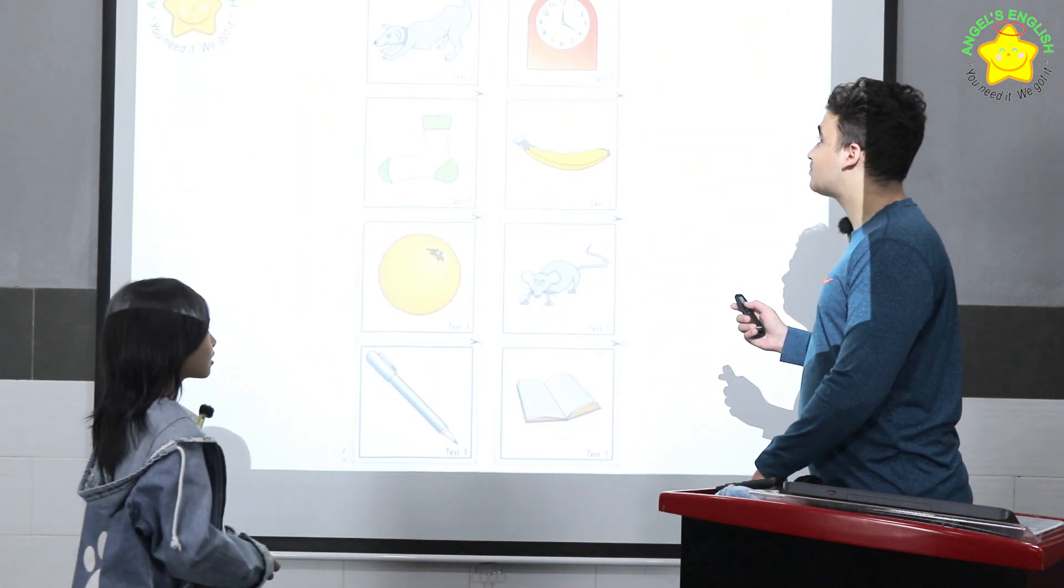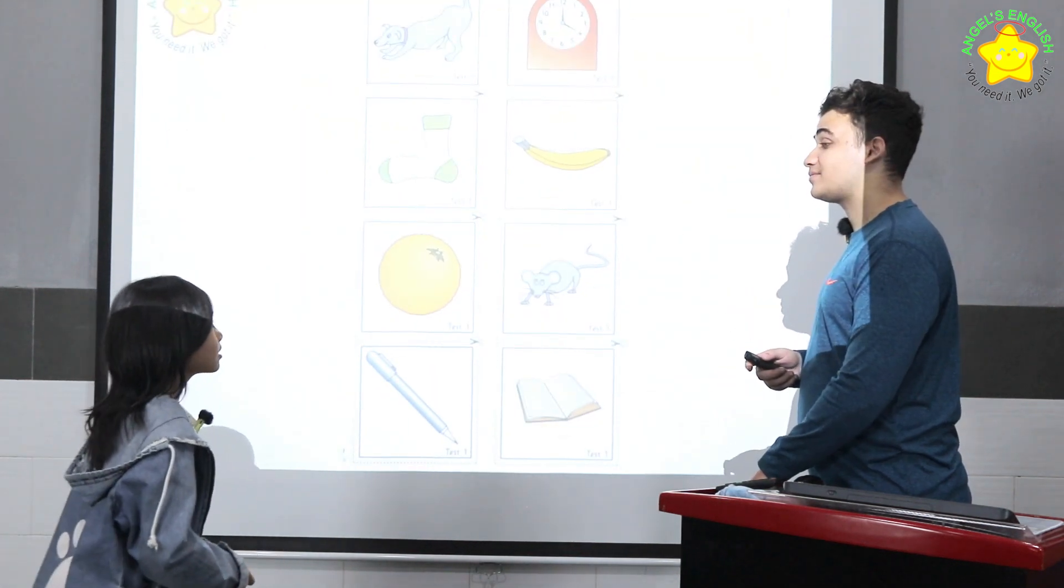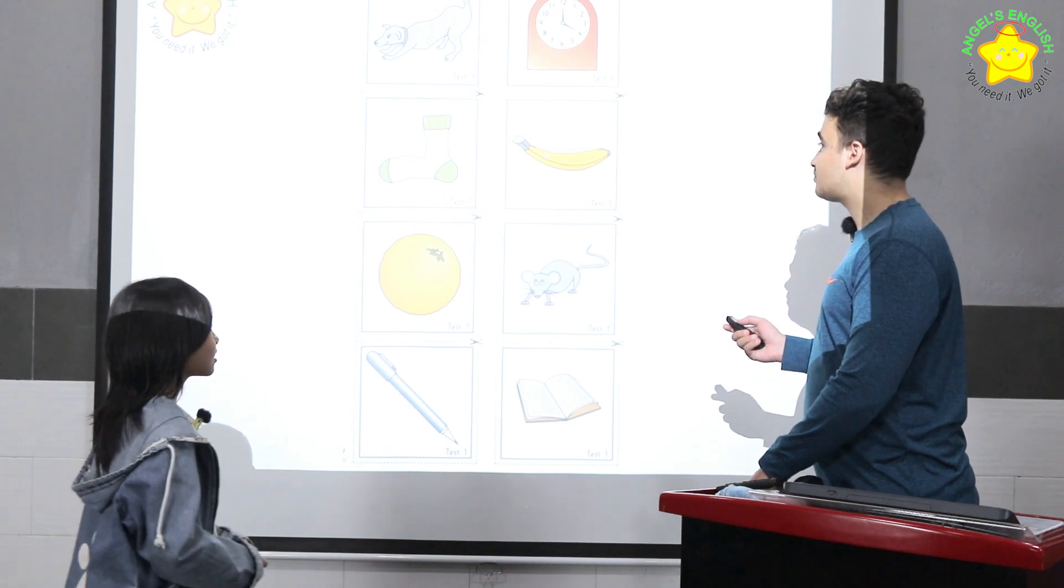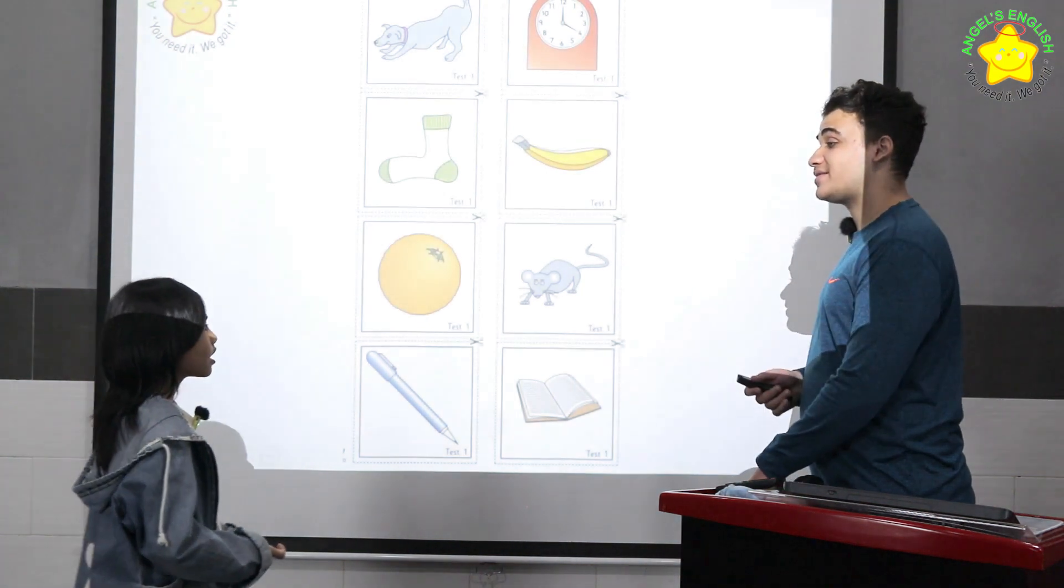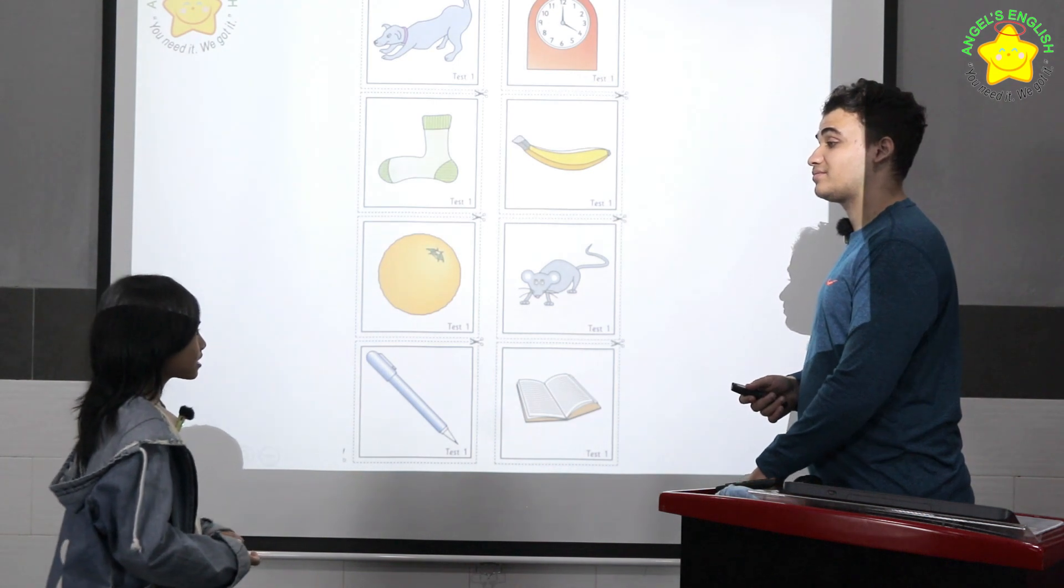What is it? It's a clock. What time is it? It's 4 o'clock. What is it? It's a banana. Where can you buy bananas? I can buy bananas at the supermarket.